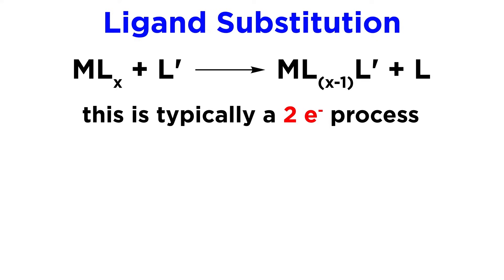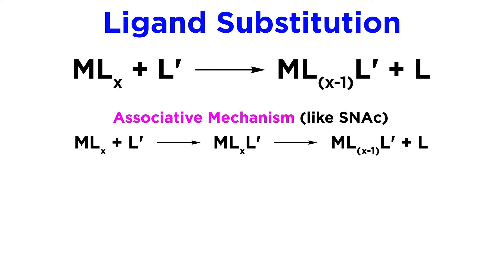This can occur in one of three ways. It can be an associative process, which is sort of like SN2. The new ligand joins the complex, forms a more ligated intermediate, and then some other ligand leaves.